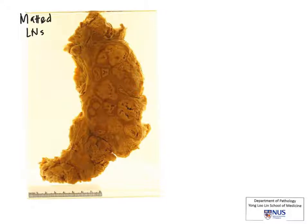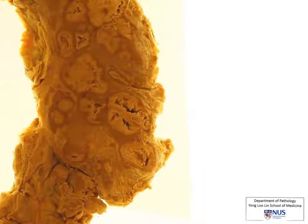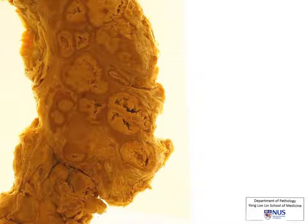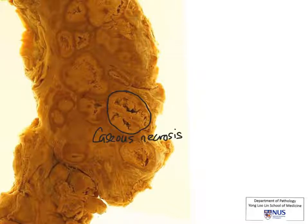Now let's take a closer look at the gross appearance. We can see that even within this nodal mass, there are some areas that show a different colour — here that I'm outlining, as well as here and here. They are paler, and there seem to be some areas of cavitation showing that this tissue is very friable. This is the gross appearance of caseous necrosis, and this is one of the key features of tuberculosis infection. Therefore, the diagnosis in this case is tuberculosis lymphadenitis.